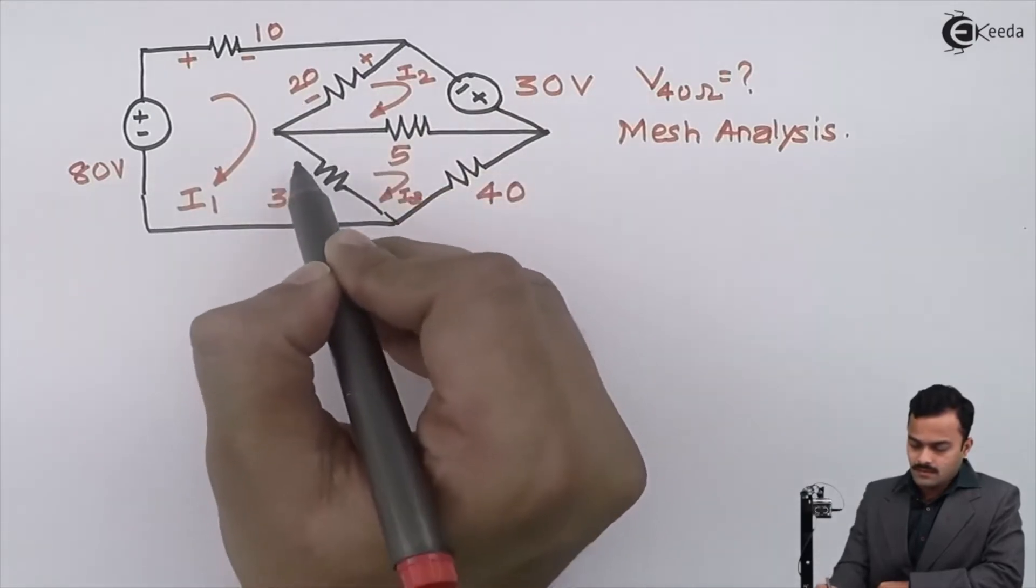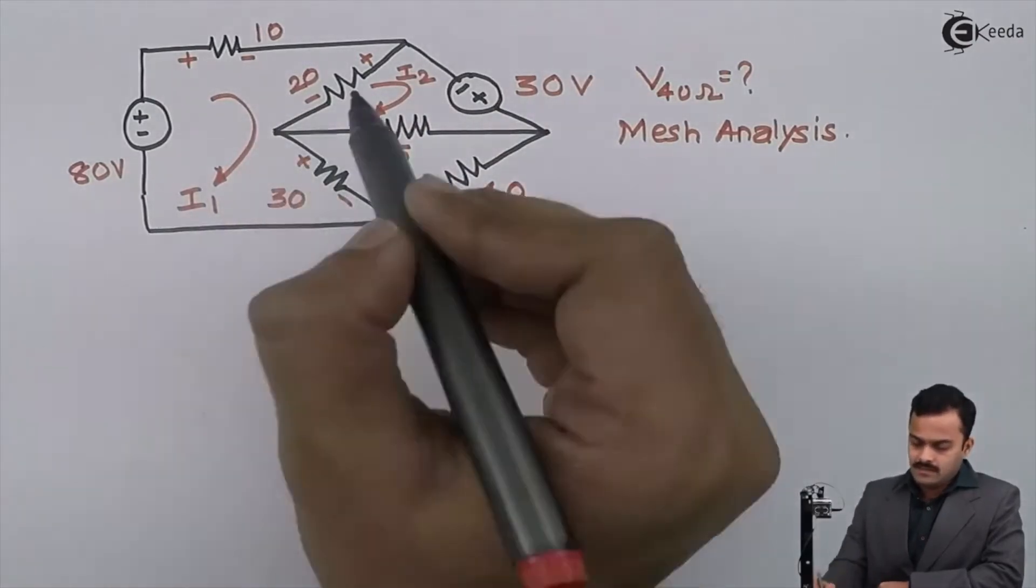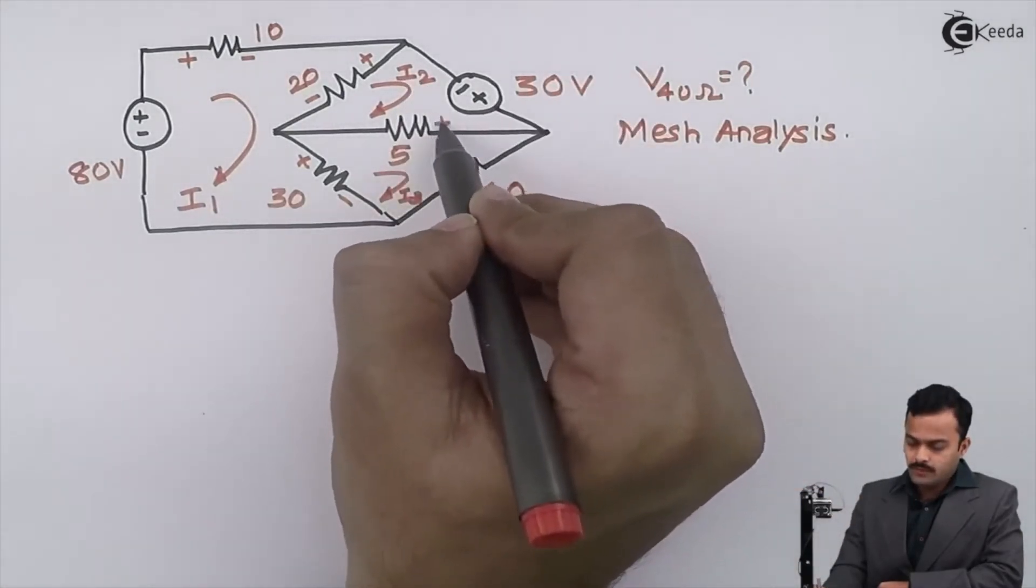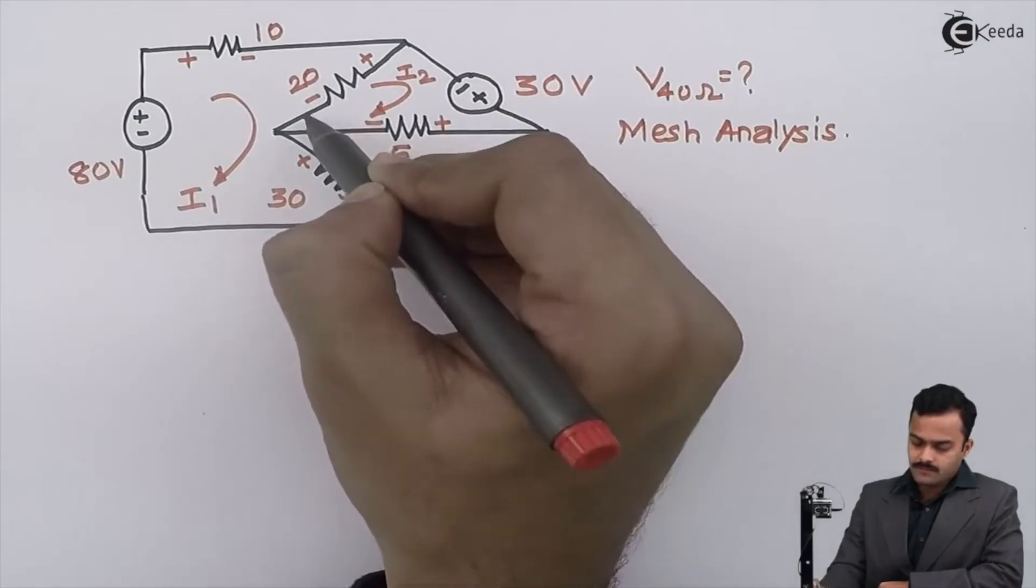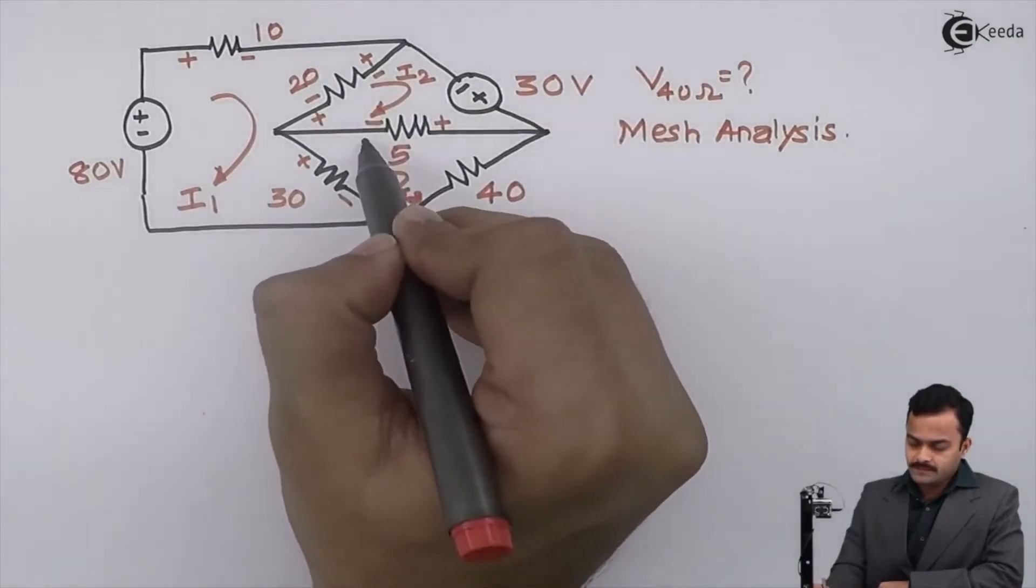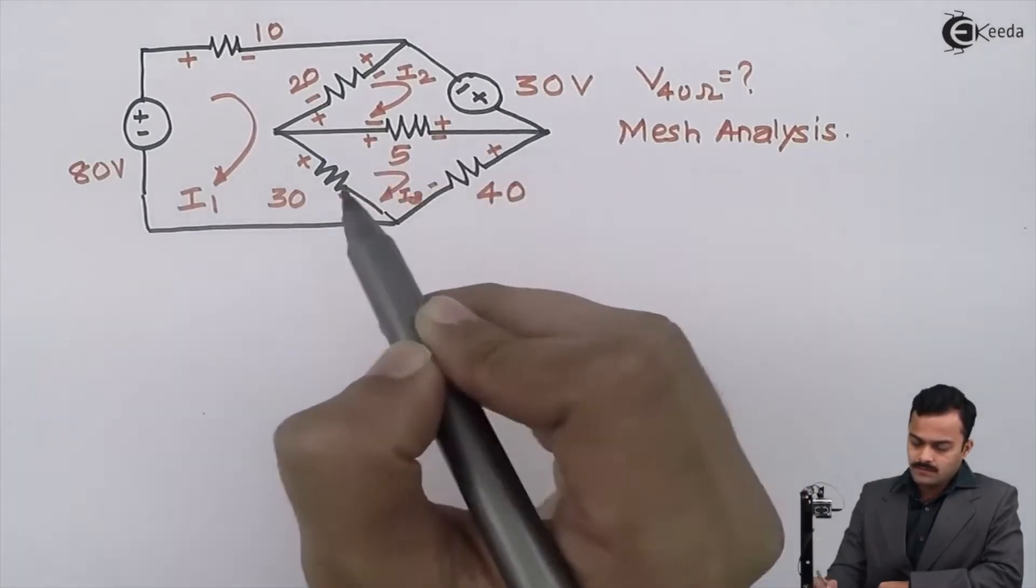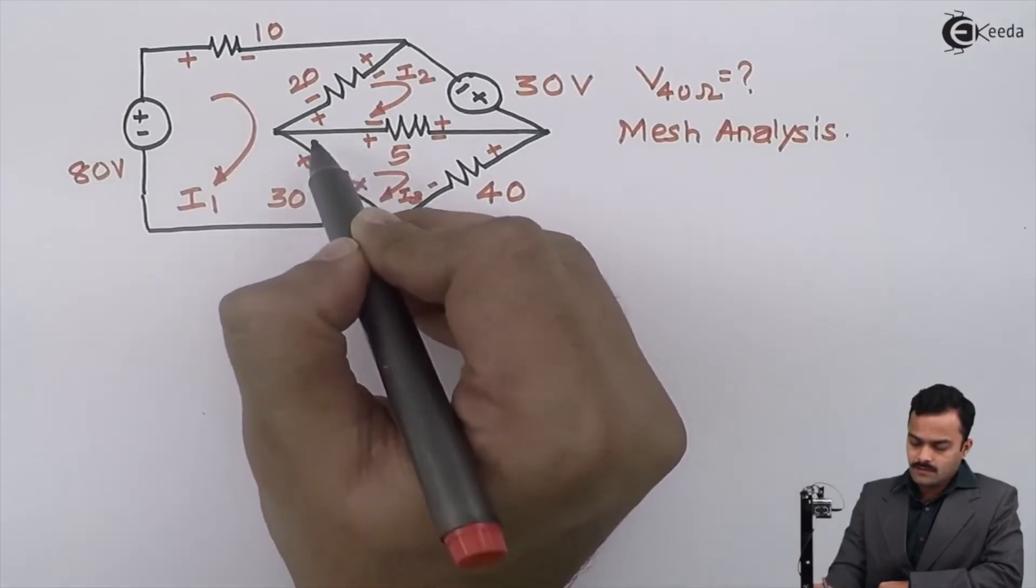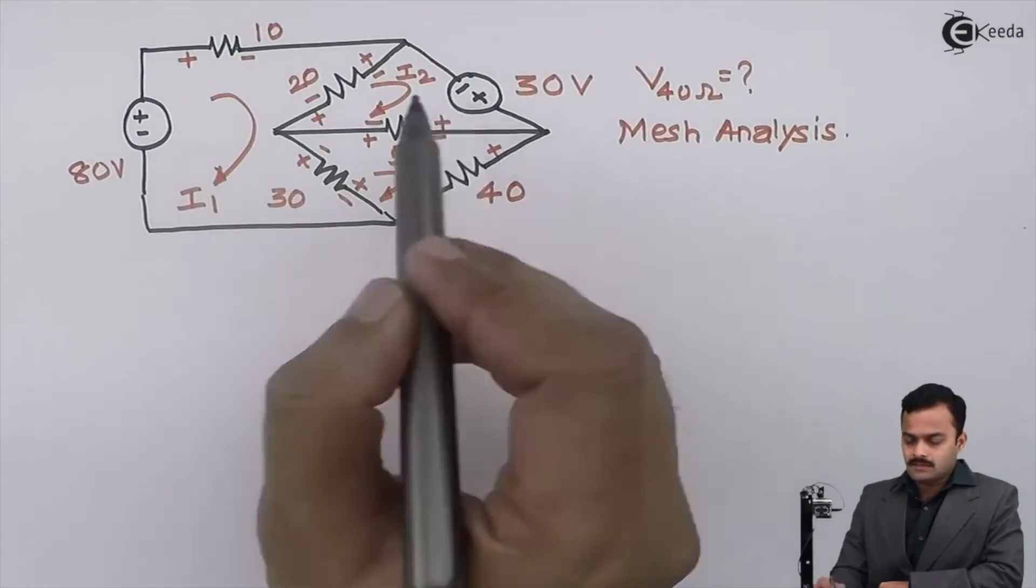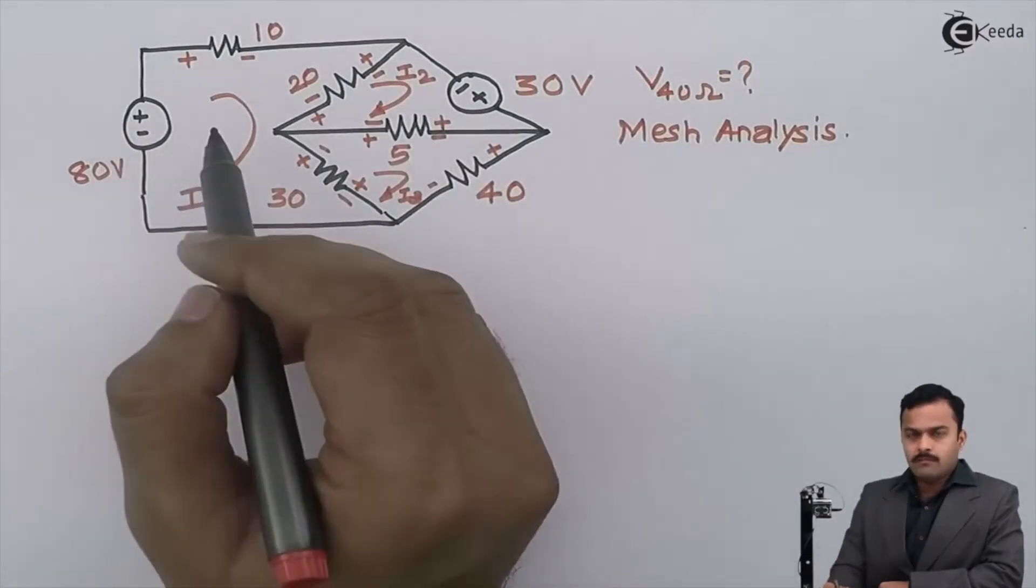So it's plus minus, plus minus, this is also plus minus like this. For loop 2, I will have voltage drops plus minus, plus minus. For loop 3, plus minus, plus minus, and plus minus. Batteries' polarities are the same the way they have given, because it does not depend upon direction of current.